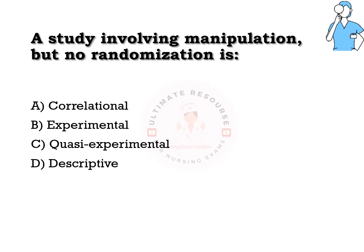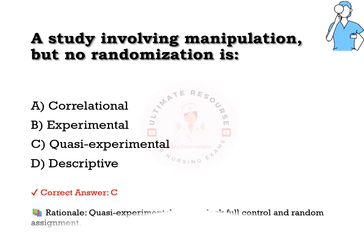The study involving manipulation but no randomization is: options are a) correlational, b) experimental, c) quasi-experimental, d) descriptive. The answer is c) quasi-experimental. Quasi-experimental studies lack full control and random assignments.